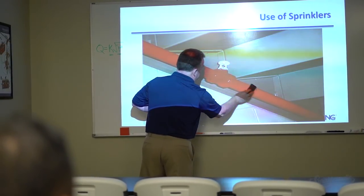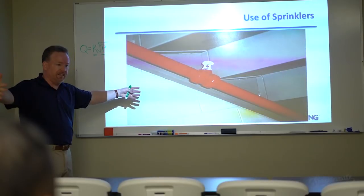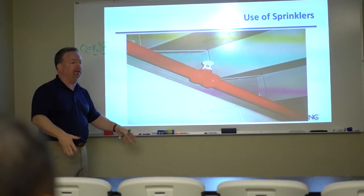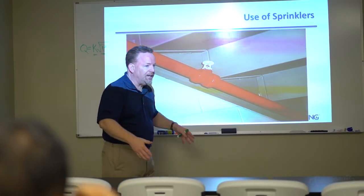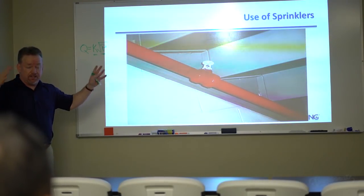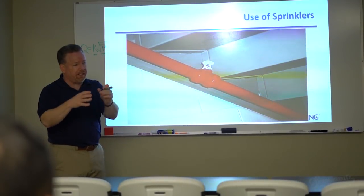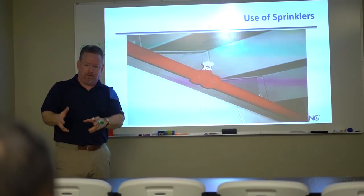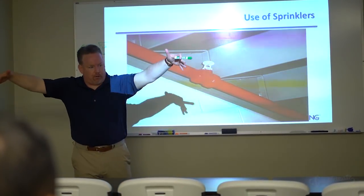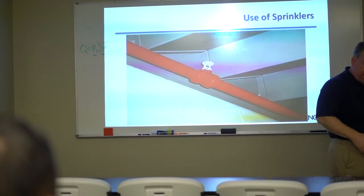Underneath each sprinkler is a certain area of floor it's responsible to cover — maybe 130 square feet, maybe 225 square feet, or even up to 400 square feet, like a 20 by 20 area. The sprinkler is required to cover that area with a specific density of water.